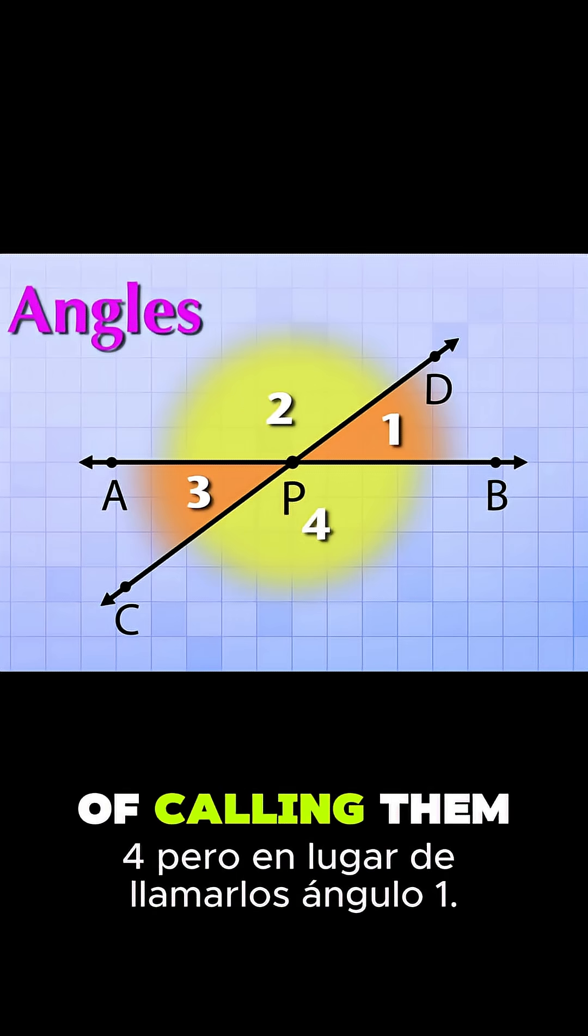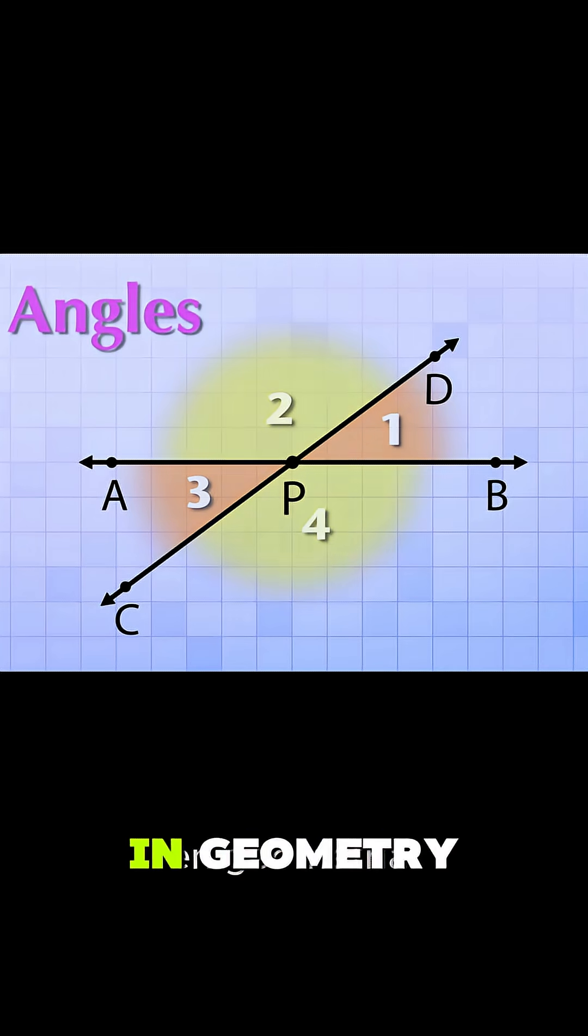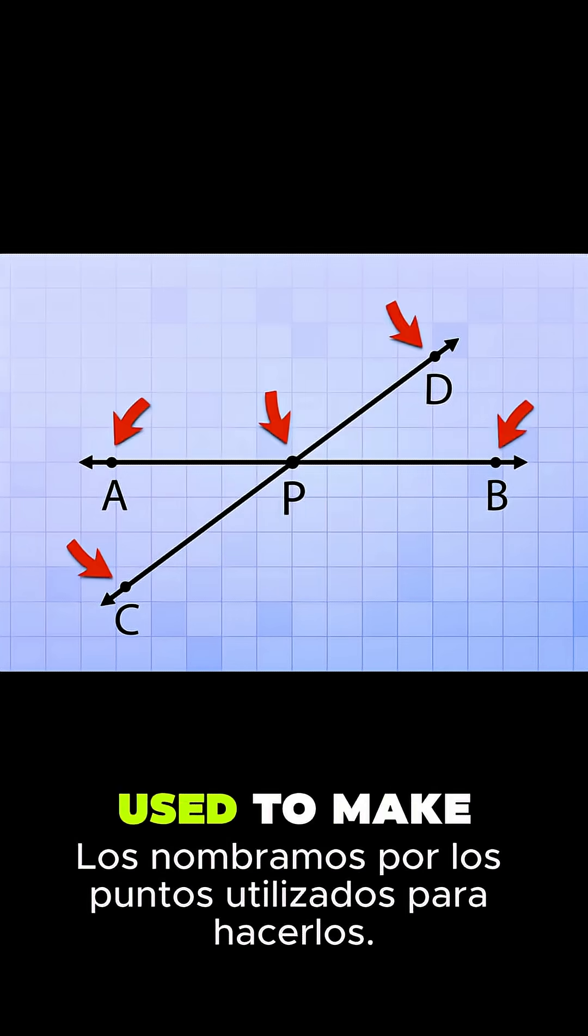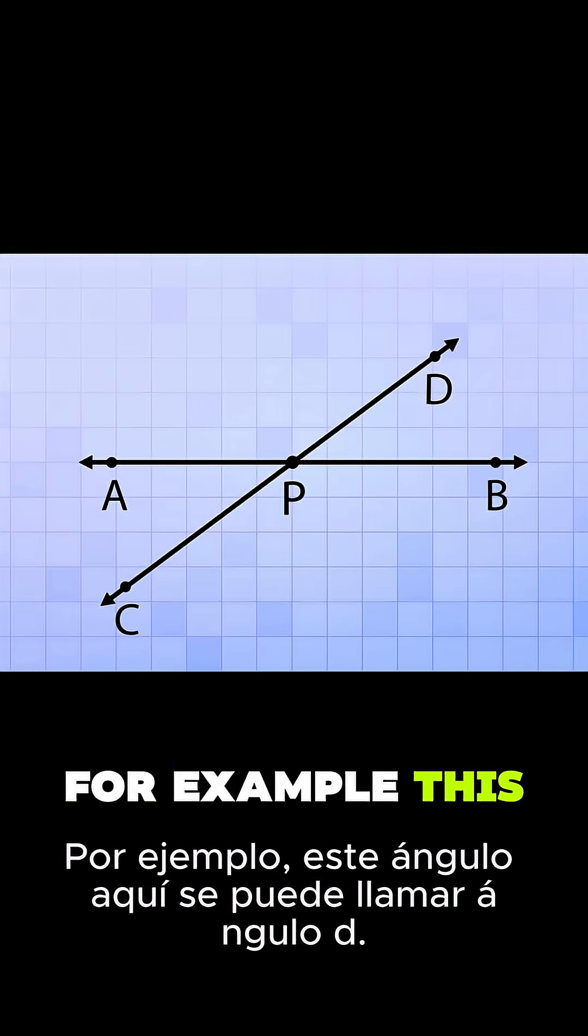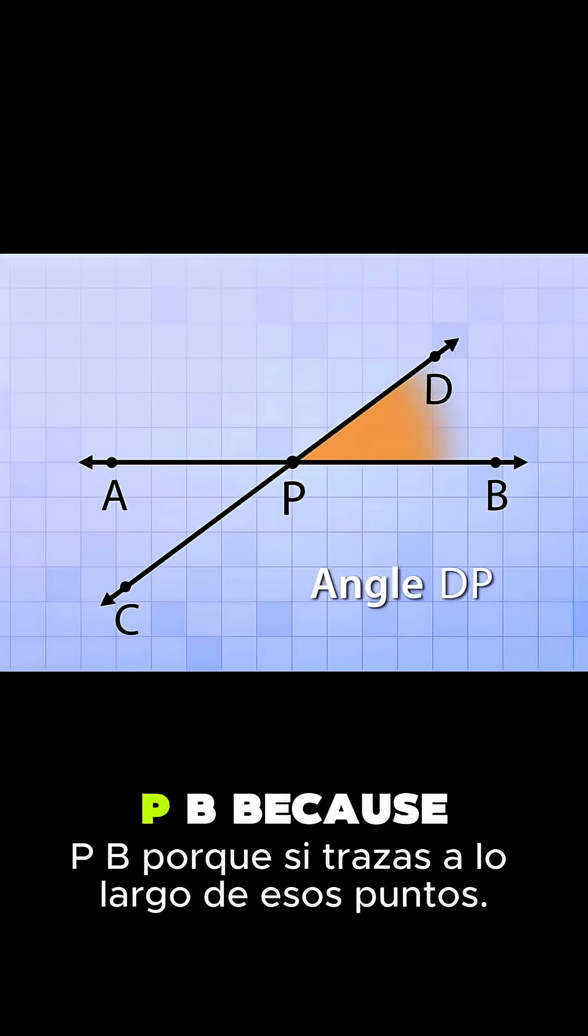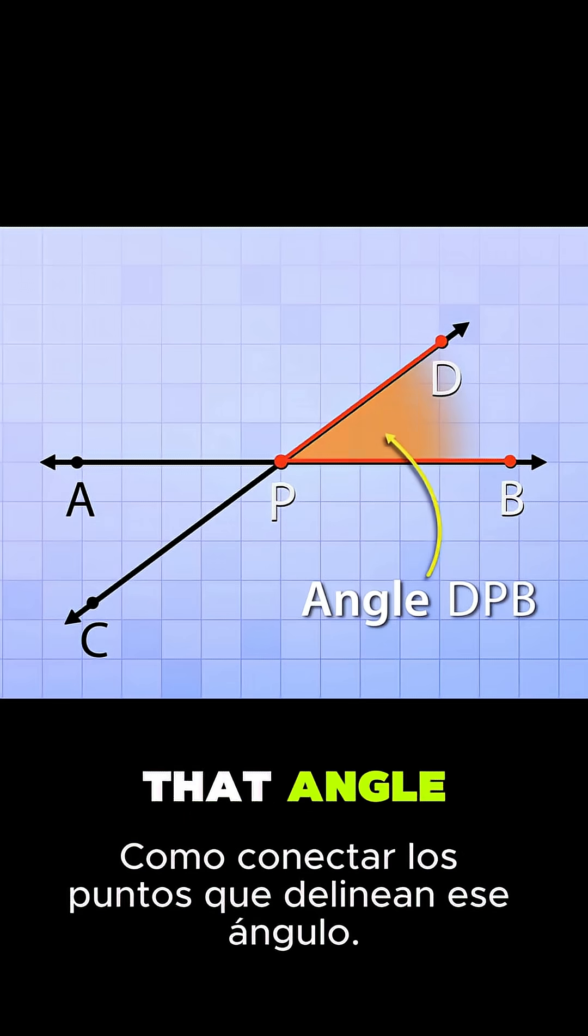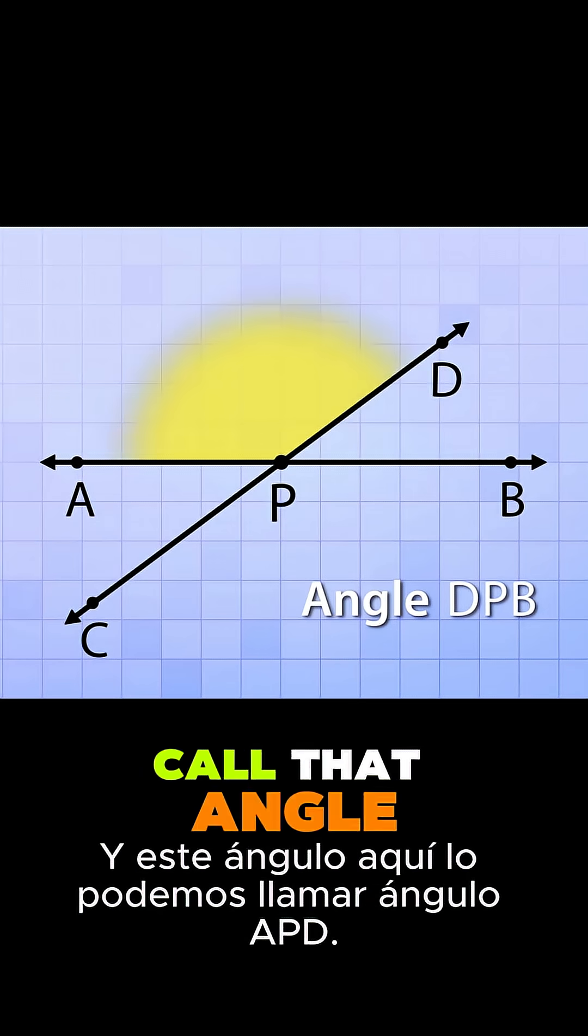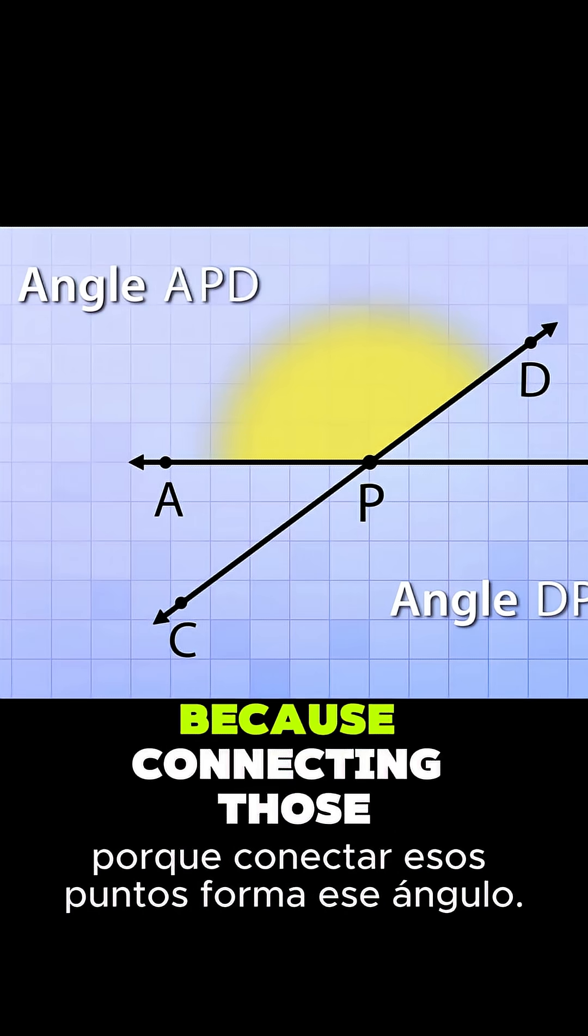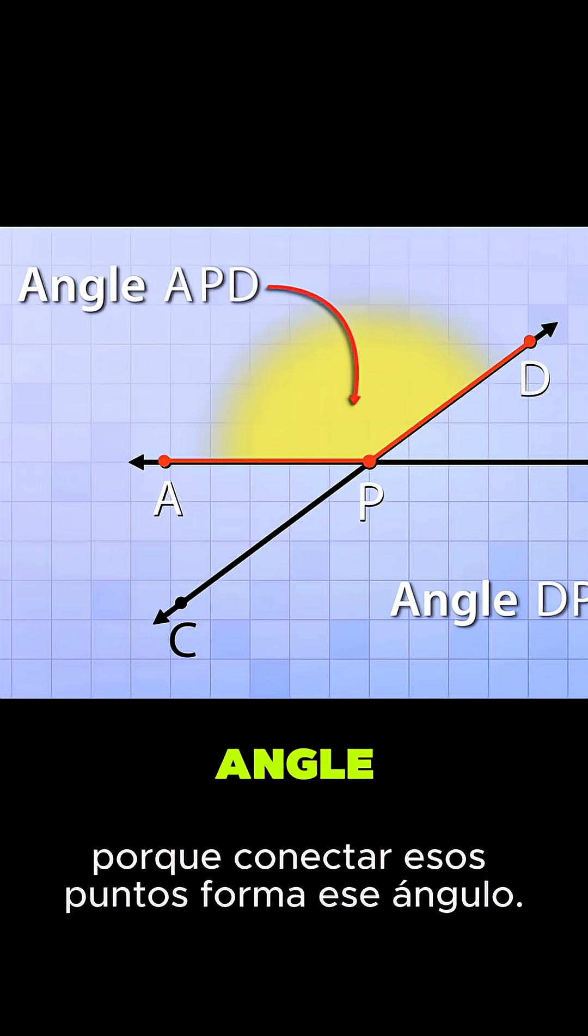But instead of calling them angle 1, 2, 3 and 4, in geometry we name them by the points used to make them. For example, this angle here can be called angle DPB because if you trace along those points, like connect the dots, they outline that angle. And this angle here, we can call that angle APD because connecting those dots forms that angle.